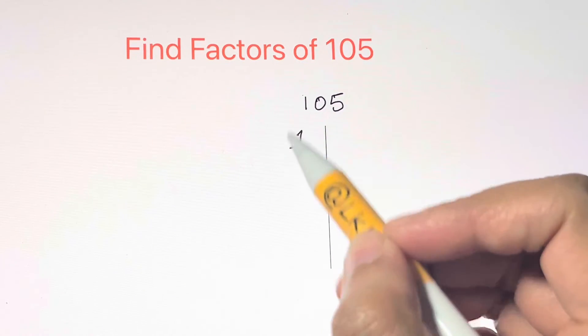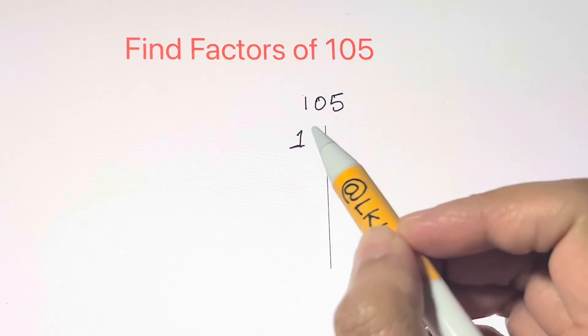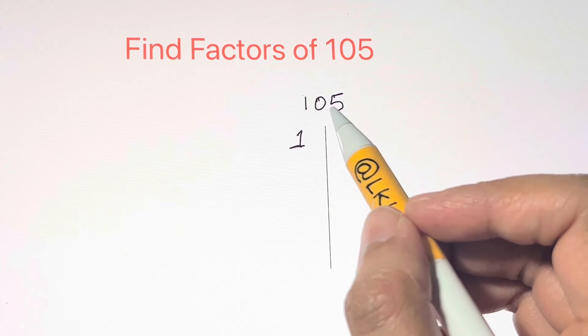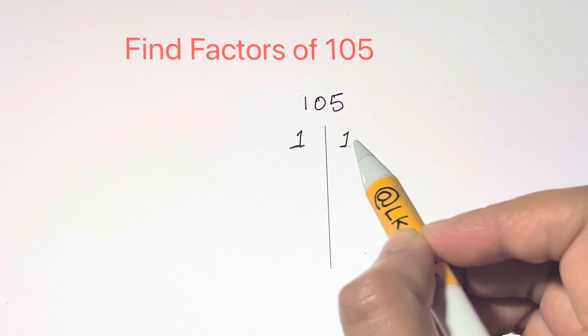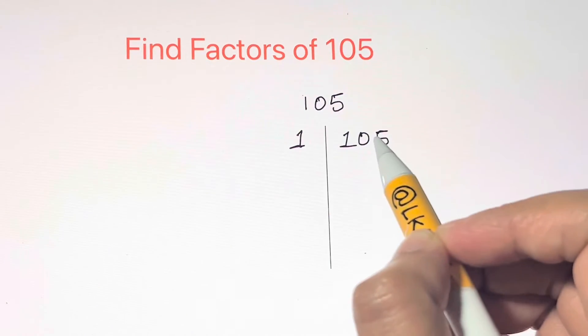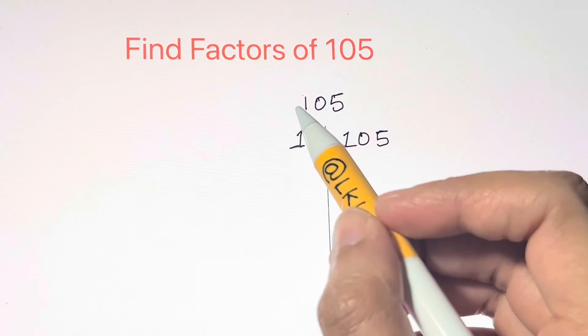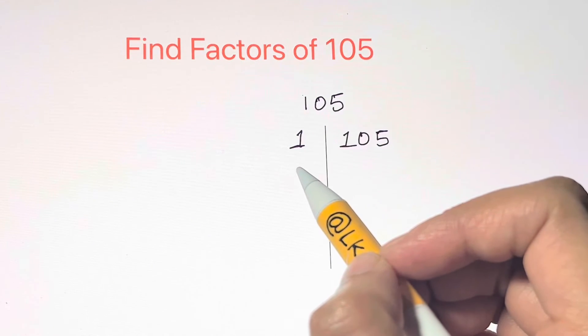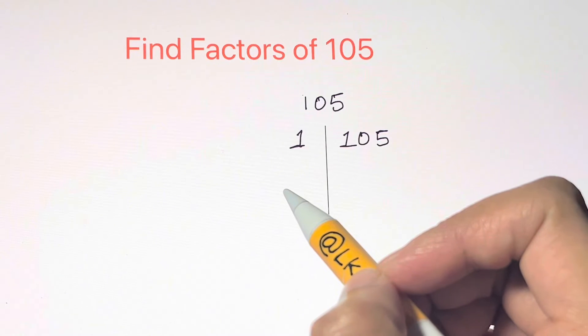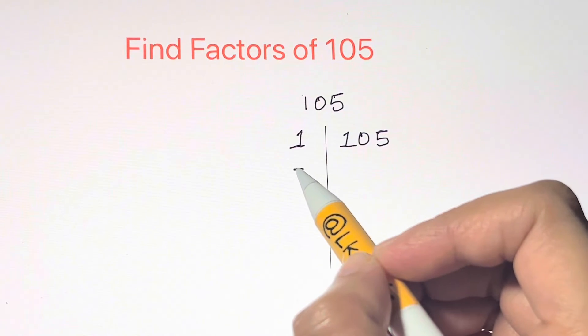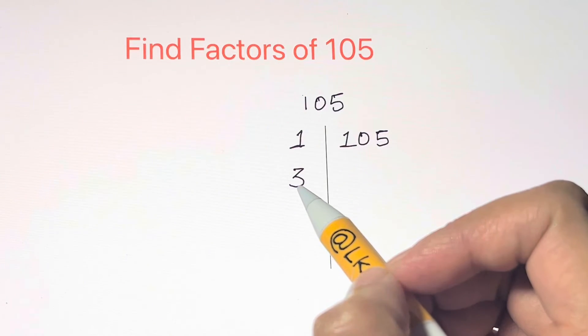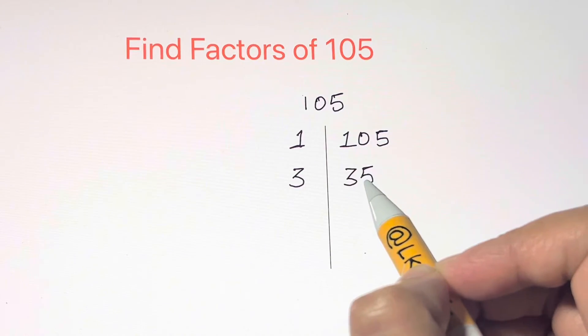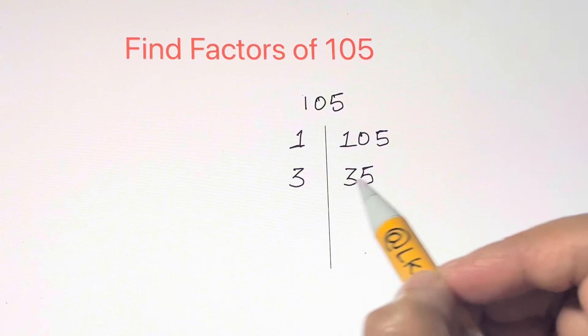Keep on dividing. So 1 multiplied by what number gives 105? That's 105. That's one pair. Then going on with the second number. Is 105 divisible by 2? No. So let's go on with another number, that's 3. Let's check if 105 is divisible by 3. Yes. 3 times 35 gives 105. That's another pair.